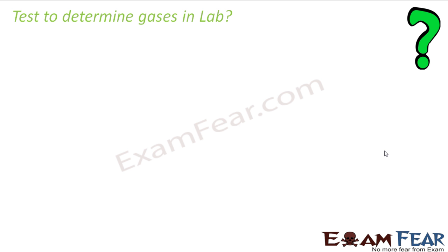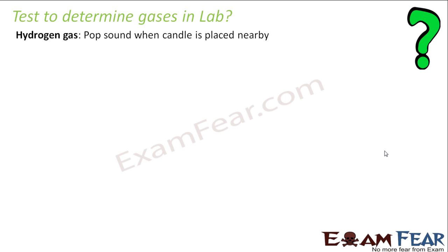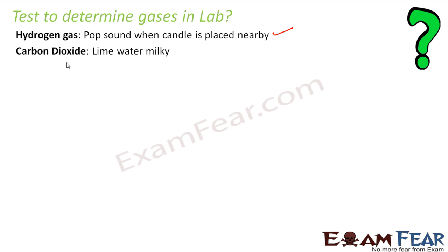One question our students ask is how to determine a gas in the lab — what is the normal experiment we use. The gases we normally deal with in lab are hydrogen gas and carbon dioxide gas. For hydrogen, a popping sound comes when a candle is placed nearby. For carbon dioxide, you pass lime water and it turns milky — that means it is carbon dioxide. To test these gases, we use these specific tests.